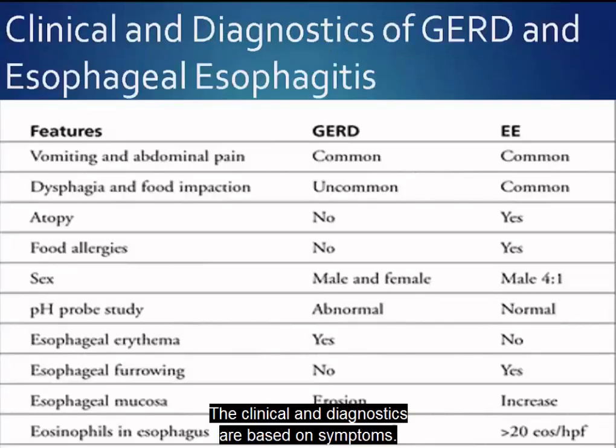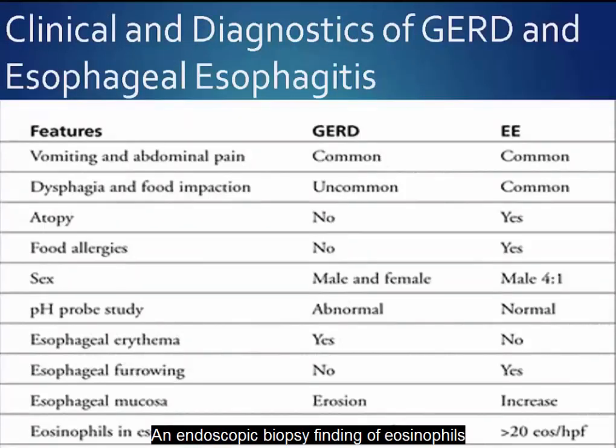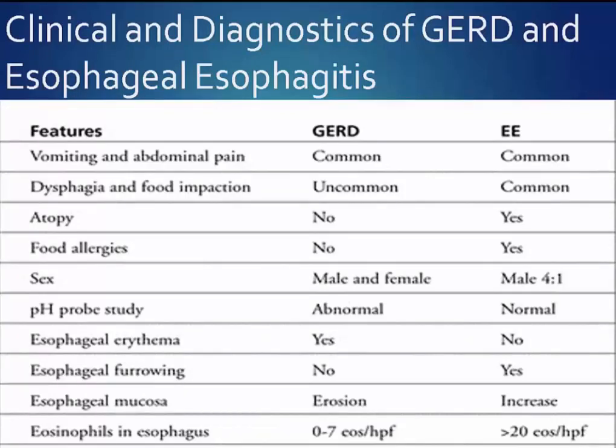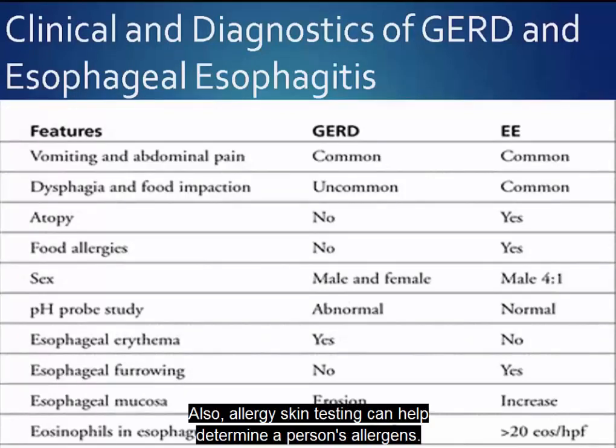The clinical and diagnostics are based on symptoms. An endoscopic biopsy finding of eosinophils that infiltrated the esophageal tissue would be present. Also, allergy skin testing can help determine a person's allergens.